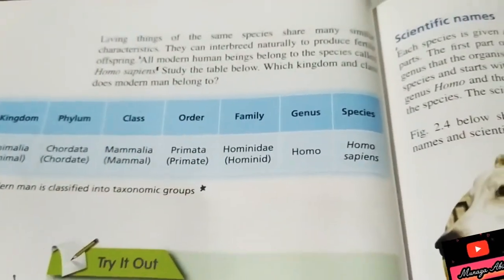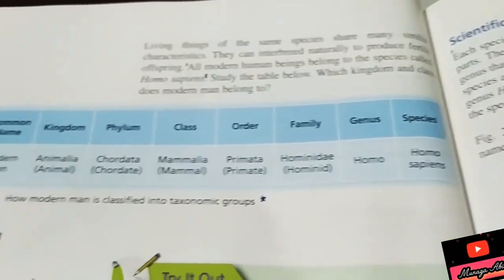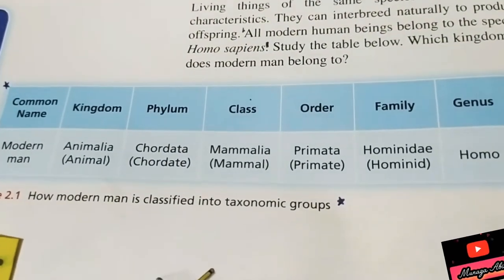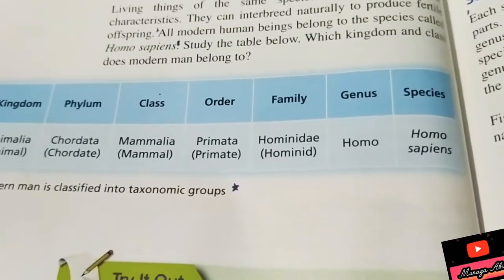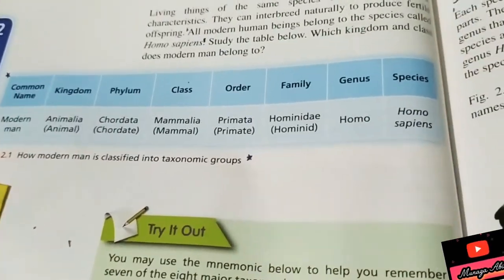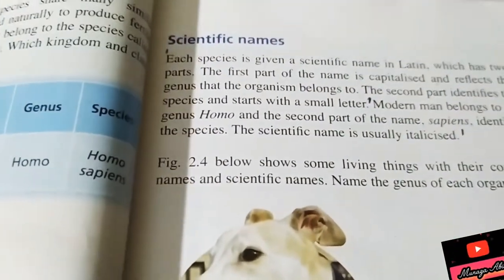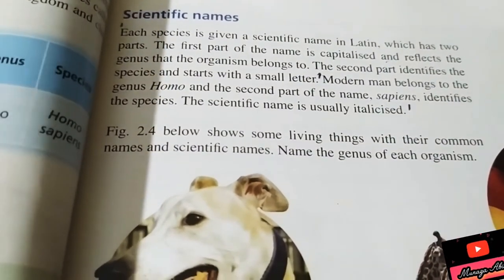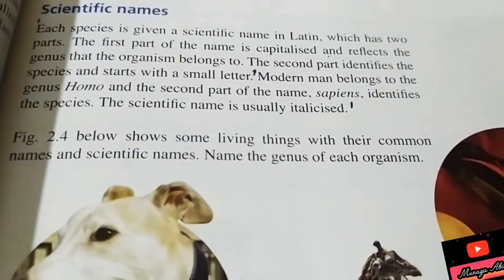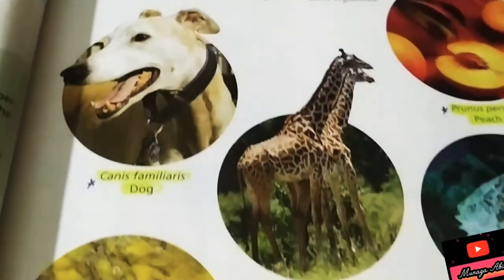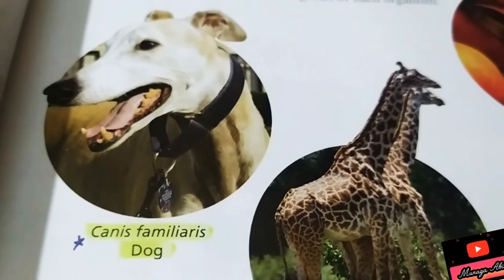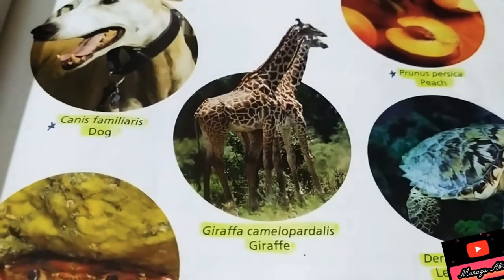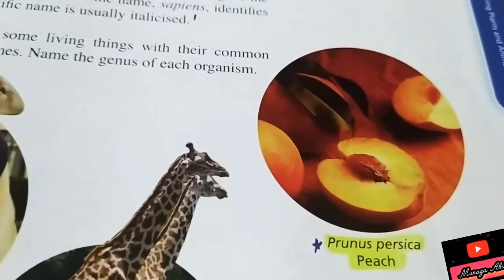Monkeys and humans share the same Kingdom, Phylum, Class, Order, and Family — and even the same Genus. But their species name is different. Homo sapiens is the name for modern man. Scientific names have two words: the first is the genus name (written with a capital letter) and the second is the species name (written in lowercase). For example, dog is Canis familiaris and giraffe is Giraffa camelopardalis.